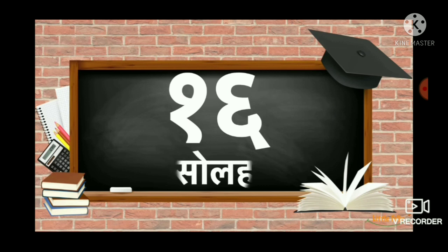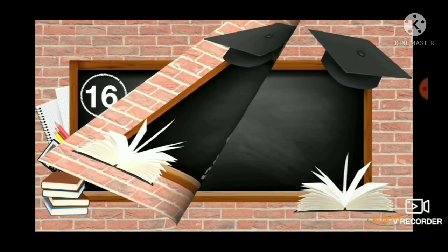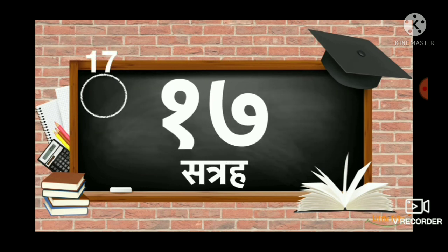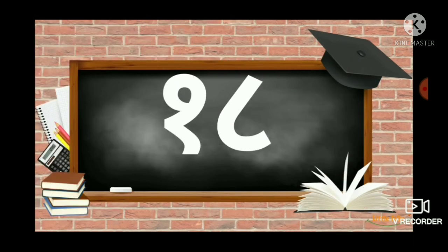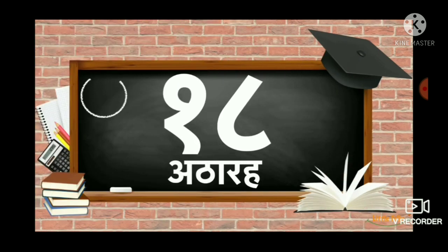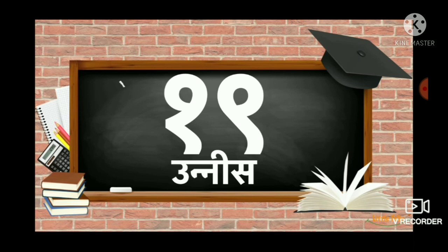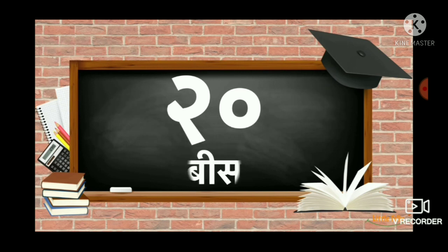16 - Sola. (Eek, chah - sola.) 17 - Saathra. (Eek, saath - saathra.) 18 - Aathara. (Eek, aat - aathara.) 19 - Unpnak. (Eek, nao - unpnak.) 20 - Bees.